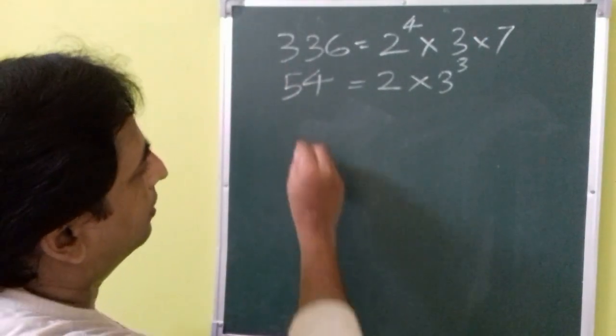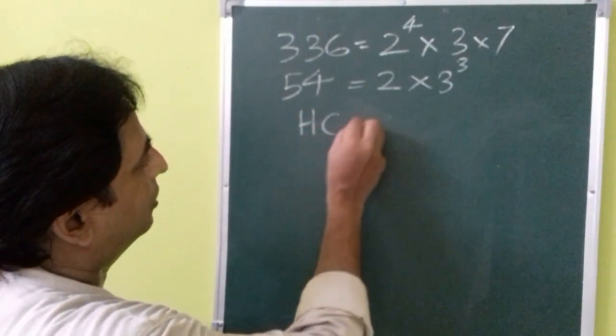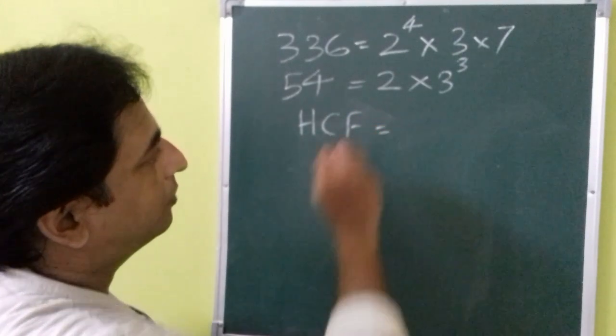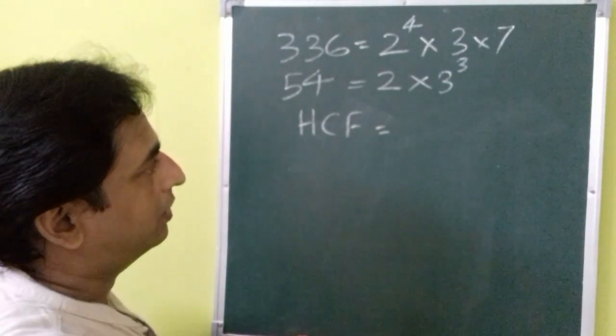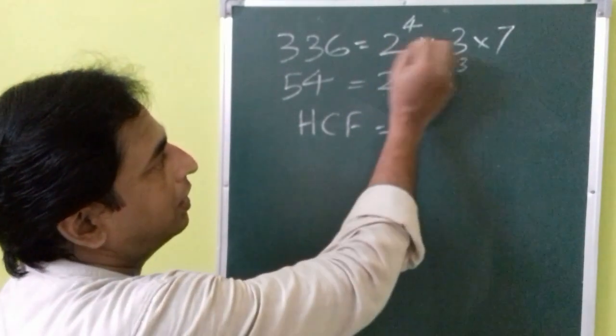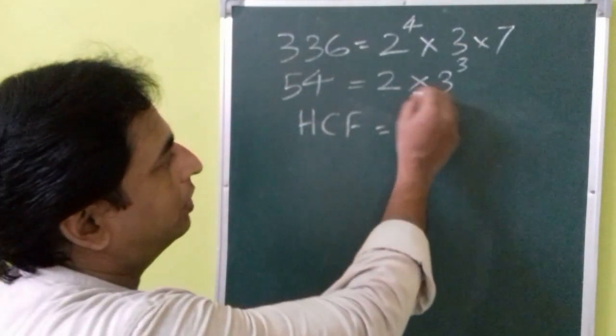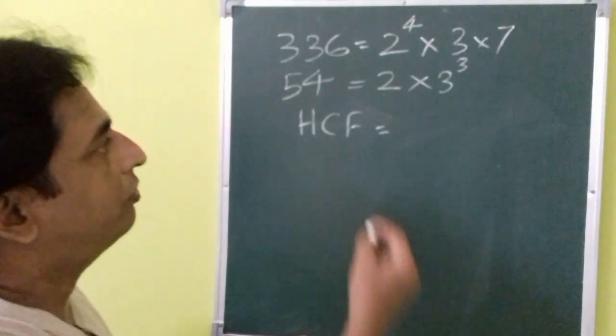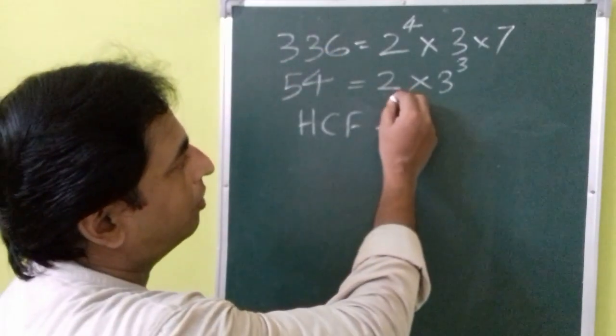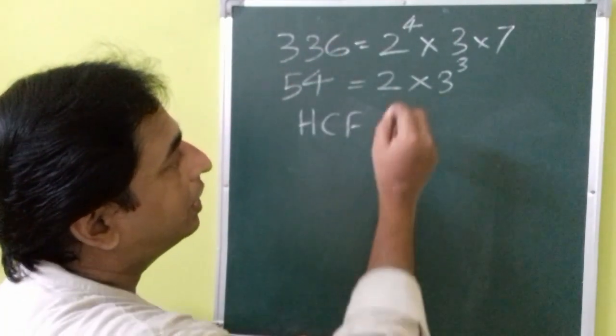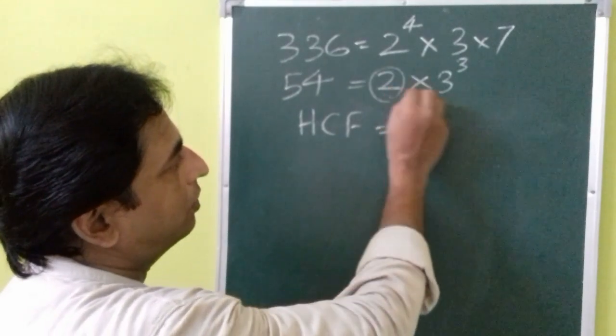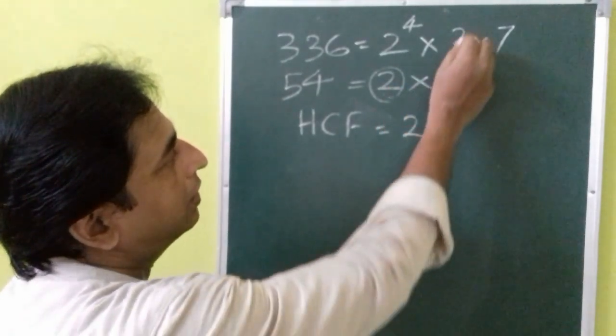So here we need to find the LCM and HCF, so HCF is always the least power of all common factors. Here 2 and 3 are present in both the numbers, both the 2 and 3 are present in the factorization of both the numbers that means the common factors are 2 and 3.